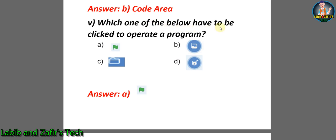Number five: Which one of the options shown has to be clicked to operate a program? Here are four icons of a program. The correct answer is A, the green flag. The other options shown are an image upload icon for uploading pictures of animals, and C is for importing or exporting any files. So the correct answer is A, the green flag.